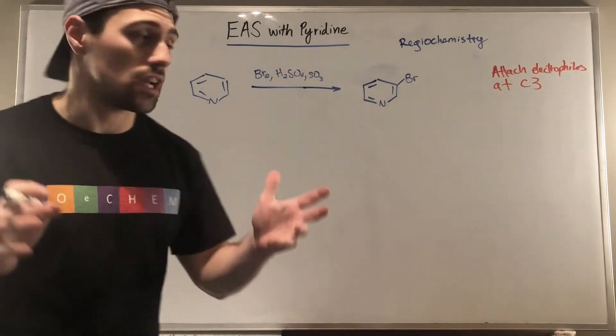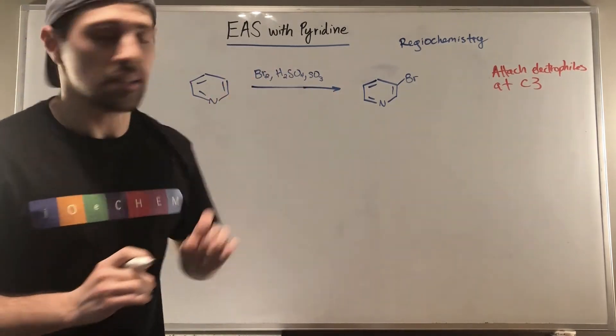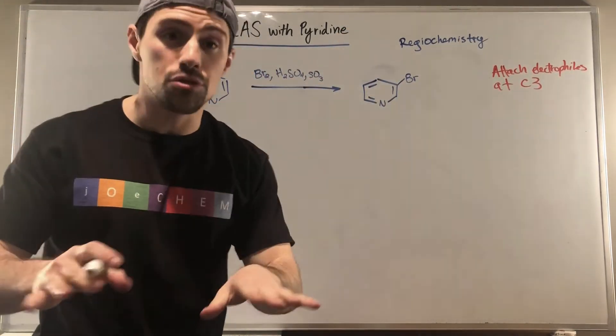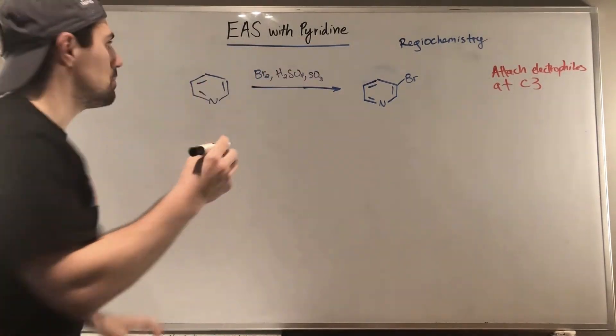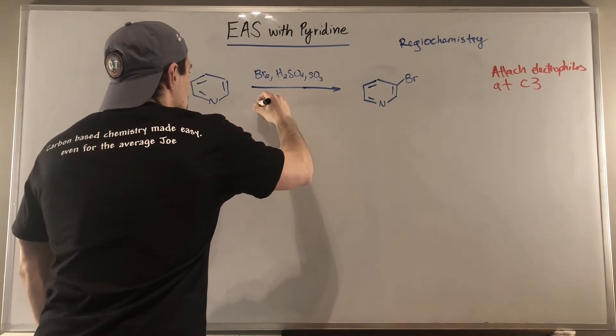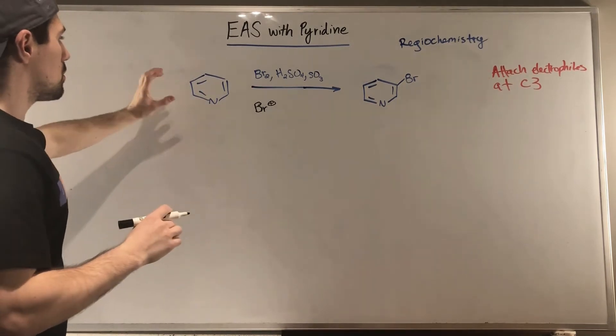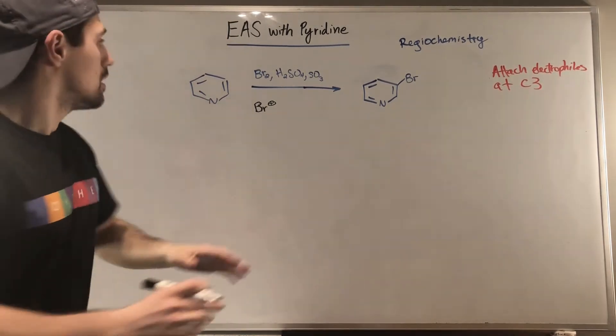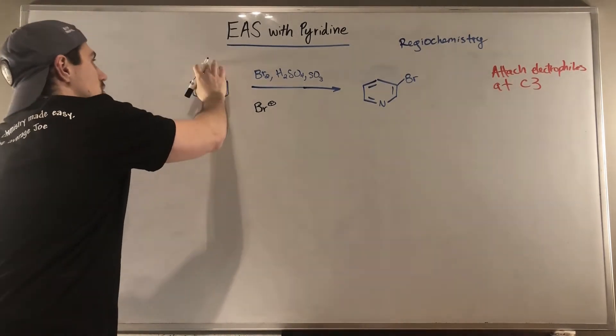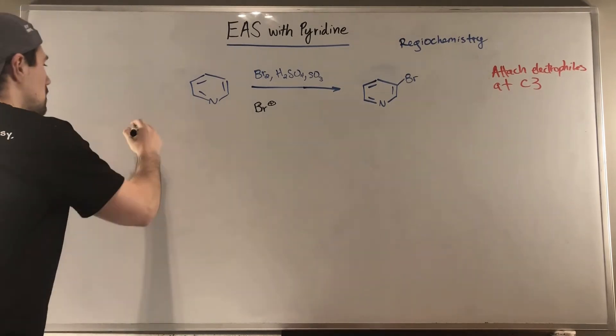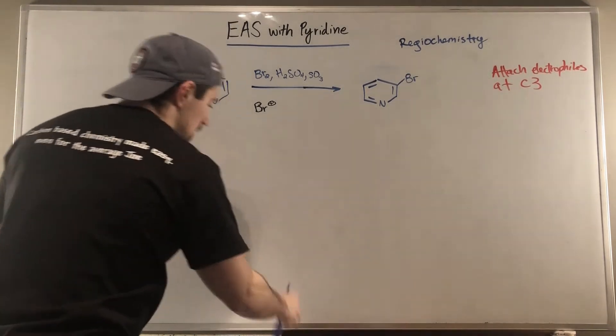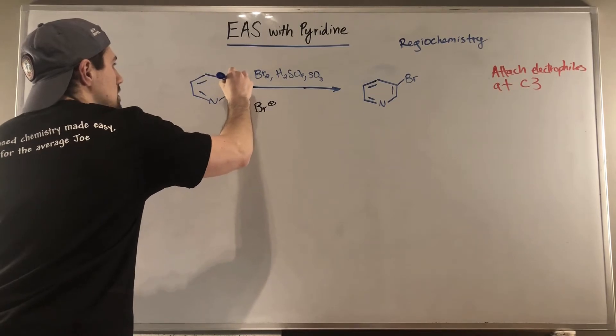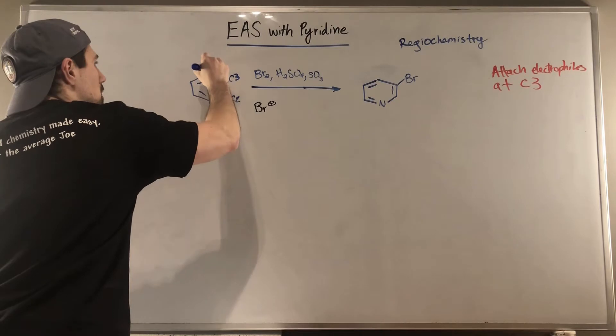We attach electrophiles at C3. So I'm going to prove this to you right now. Let's draw some resonance to prove to ourselves that this regiochemistry makes sense. So let's just run through the actual attachment of the BR+ electrophile onto the ring, and then we're going to draw some resonance to figure out why C3. This is unofficially C1, C2, C3, C4, C5, C6. So let's just go for it.